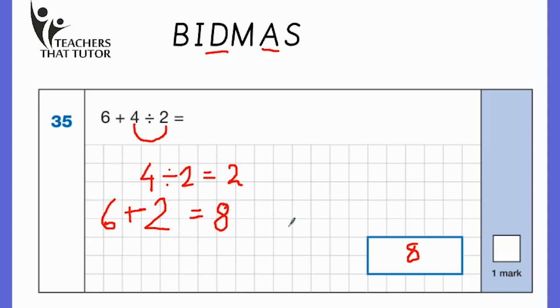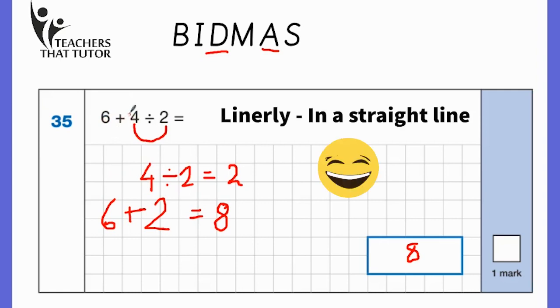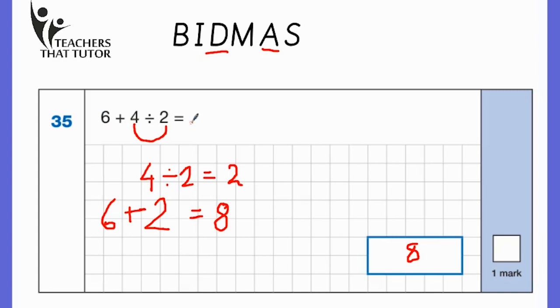However, what children tend to do on a question like this is if they do it in order from left to right, they're going to do 6 plus 4, which makes 10, and then they might divide that 10 by 2, which gives them an answer of 5. And lots of children have done this. 5 would be incorrect, because they haven't used the order of the operation, they haven't used BIDMAS.